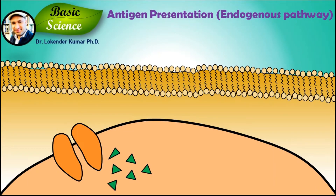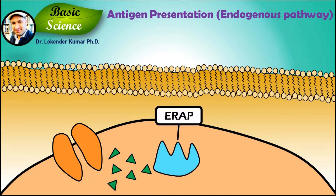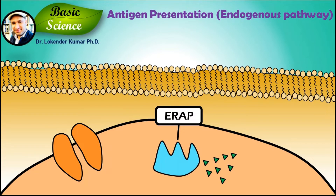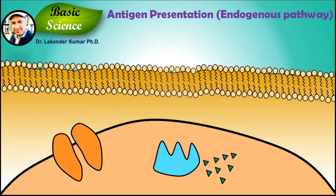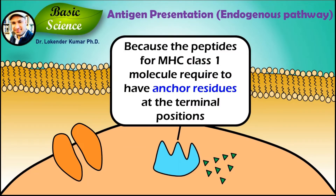After crossing the membrane of the rough endoplasmic reticulum, the peptides are trimmed by endoplasmic reticulum aminopeptidase, in short ERAP. This protein has affinity for peptides with hydrophobic or basic amino acids at the carboxy terminal, because peptides for MHC class I molecules are required to have anchor residues at the terminal positions.